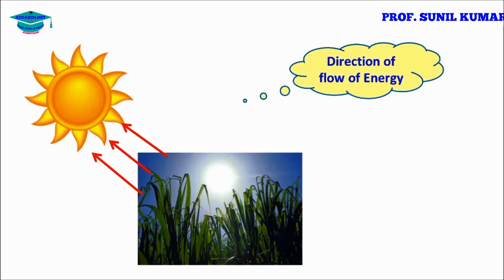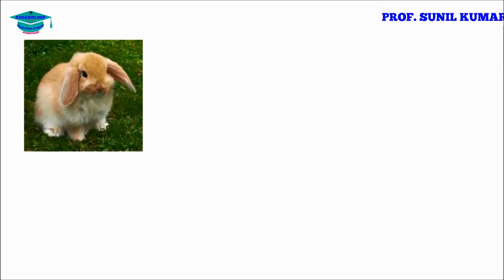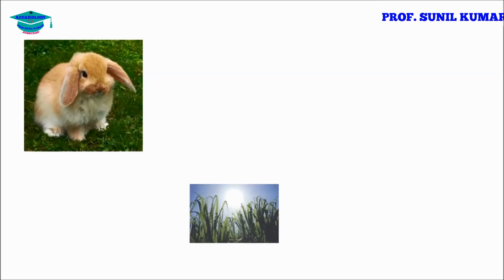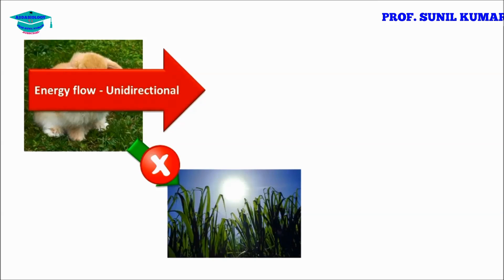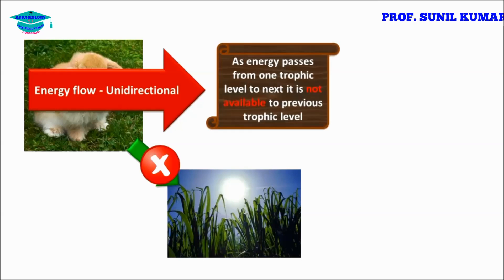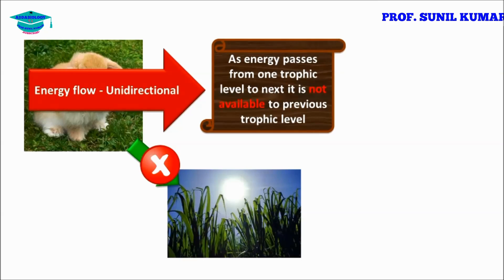Energy can never flow from plant to the Sun — it flows from the Sun to the plant, and from herbivores to carnivores. Energy flow from carnivores to herbivores is not possible. Therefore, energy flow is always unidirectional.